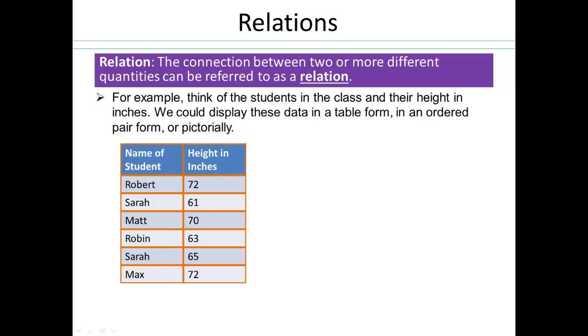We can also record our information in ordered pairs. This is called a set notation. A is the collection of all pairs of data that we have here. So Robert is 72 inches, that's the first pair. Sarah, 61 inches is the second, and so on. So we can list them as separate pairs in a set notation in this form.